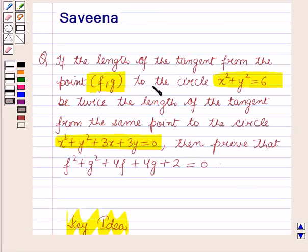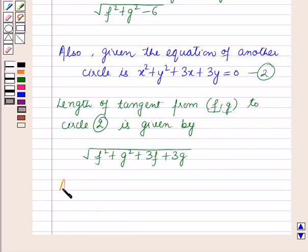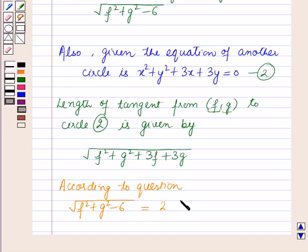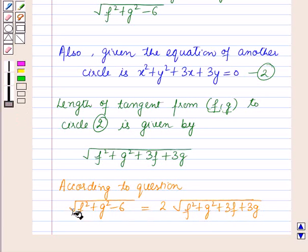According to the condition given in the question, the length of the tangent from the point to the first circle is twice the length of the tangent from the same point to the second circle. According to the question we have: √(f² + g² − 6) = 2 × √(f² + g² + 3f + 3g).